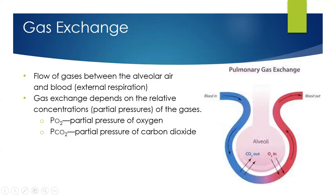Gas exchange happens in the alveoli — it is the flow of gases between the alveolar air and the blood. Ventilation is air going in and out; it's just your air in and your air out. Respiration is where the gas exchange occurs. Gas exchange depends on the relative concentration of gases, and gases move from high-pressure to low-pressure areas according to the gradient.